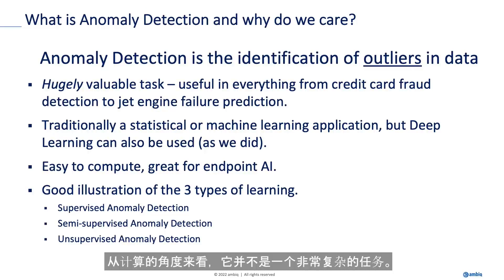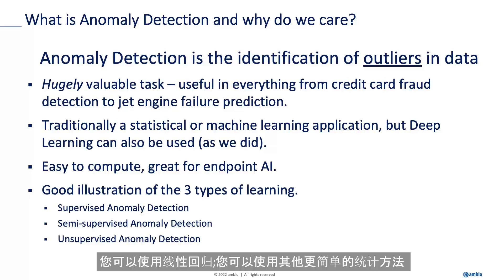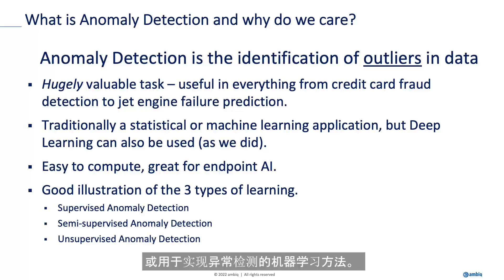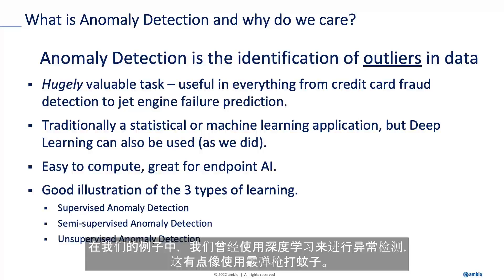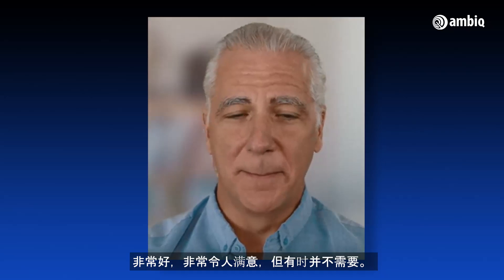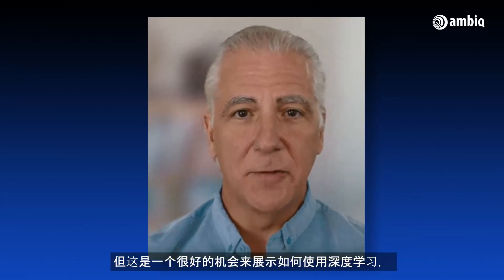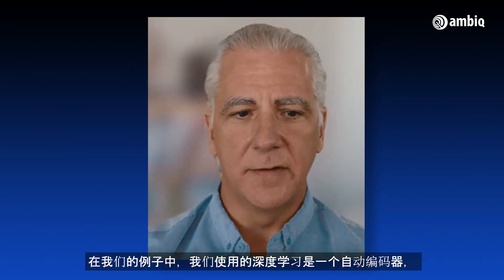As these things go, anomaly detection is not a very computationally intense task. It is a mathematical thing. You can use linear regressions or other simpler statistical methods or machine learning methods to implement it. In our case, we used deep learning, which is kind of like using a shotgun to go after mosquitoes — enormously satisfying, but sometimes not needed. But it's a great opportunity to show how you would use deep learning. The kind of deep learning we used was an autoencoder.